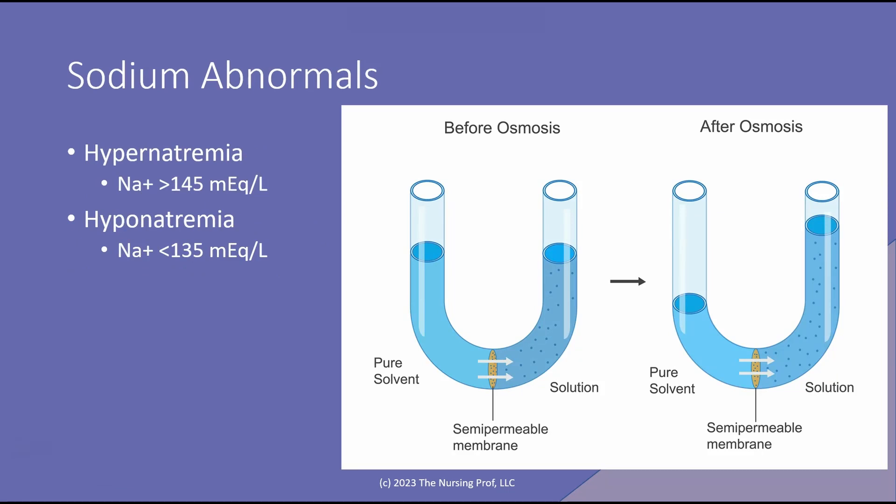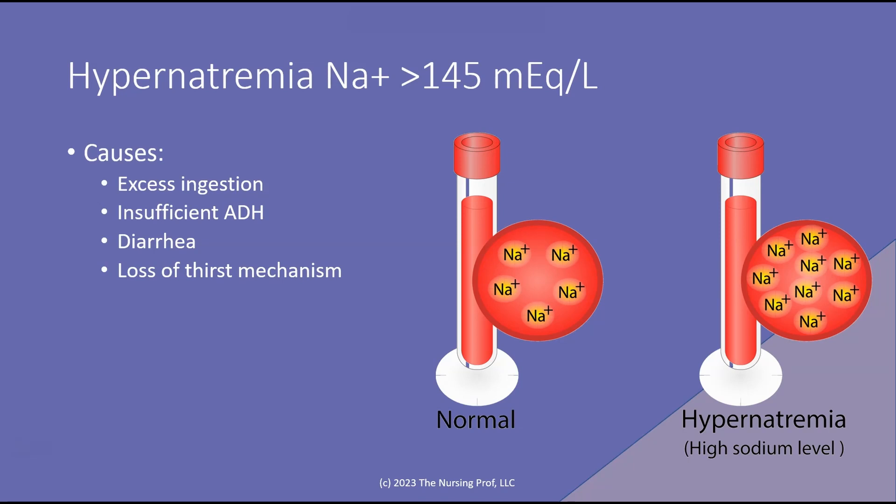So what if sodium is abnormal? We call that either hypernatremia — too much sodium — or hyponatremia — not enough sodium. Either way, that's going to cause fluid shifts in the body. Let's take a look at that in more detail.